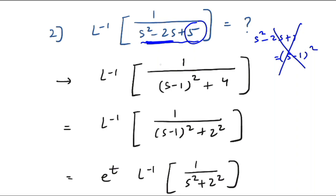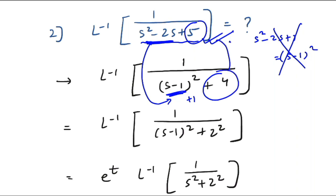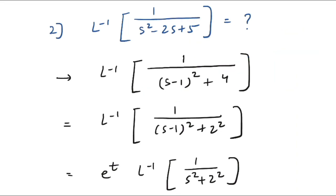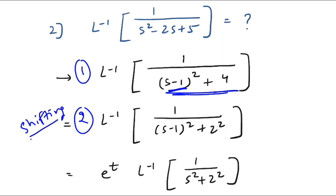Focus on the first two terms: s²−2s. We can write these as (s−1)², which expands to give s²−2s as the first two terms, but the third term is +1. Since we need +5, we add +4. So the denominator becomes (s−1)²+4, or (s−1)²+2². This is the completing-the-square technique to get the format (s−something)²+something².